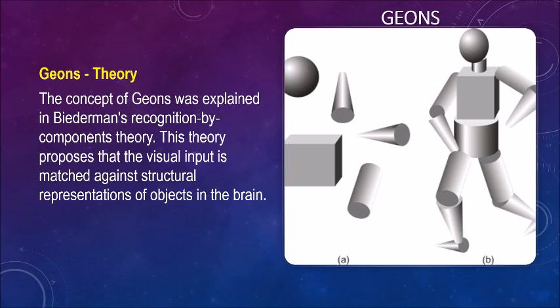In short, we visualize the things we see in their simplest structural form that matches with the existing information about the objects in our brain. Then we are able to compose a complete shape or picture of what we see.